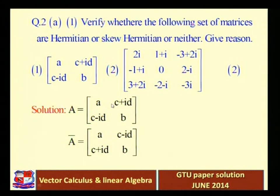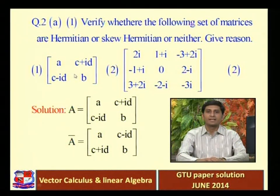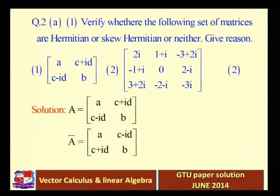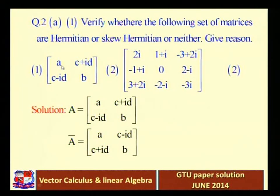Hermitian means: a square matrix A is called a Hermitian matrix if A* equals A, where A* is the transpose of the conjugate (complement) of the matrix. We denote the conjugate as A-bar, and A* is the transpose of A-bar. If A* equals A, it is Hermitian; if A* equals −A, it is Skew-Hermitian; if neither condition is satisfied, it is neither.